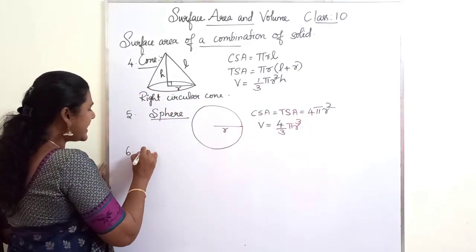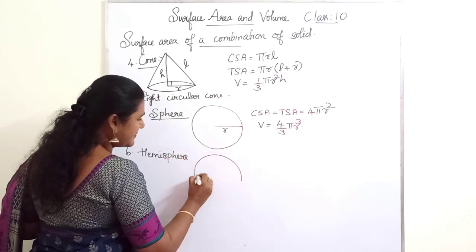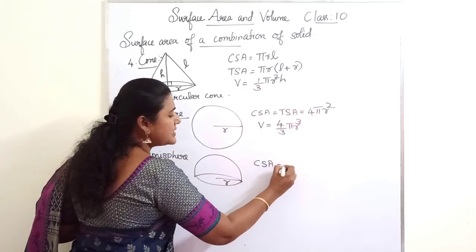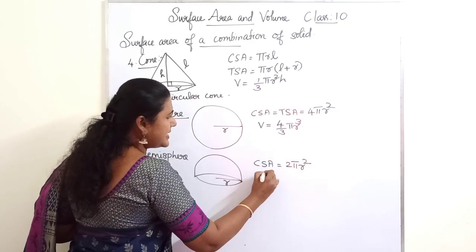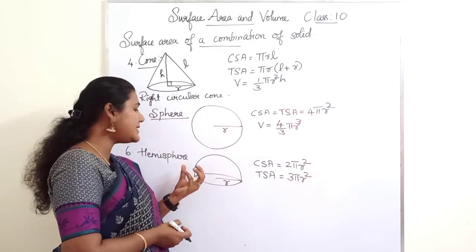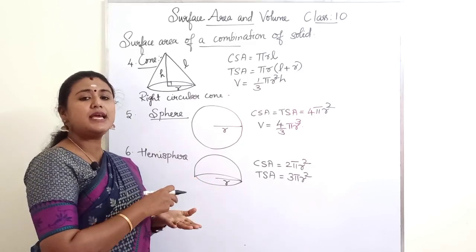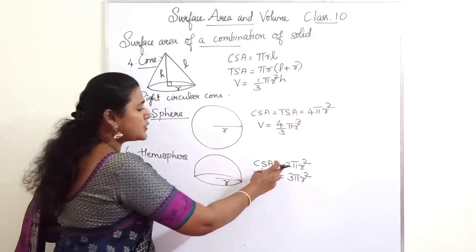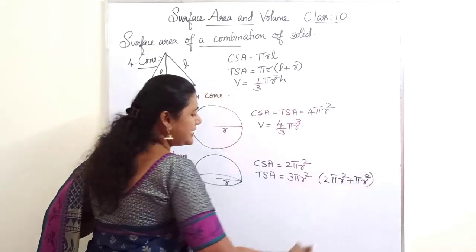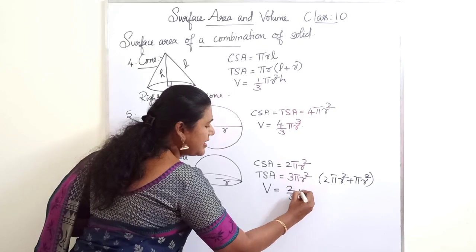The last solid shape is hemisphere. If the radius is R, then the CSA of a hemisphere is 2πR² and the TSA is 3πR². TSA is the sum of the curved surface area and the base of the hemisphere. The base is a circle, so 2πR² plus πR² gives the TSA of 3πR². The volume is (2/3)πR³.